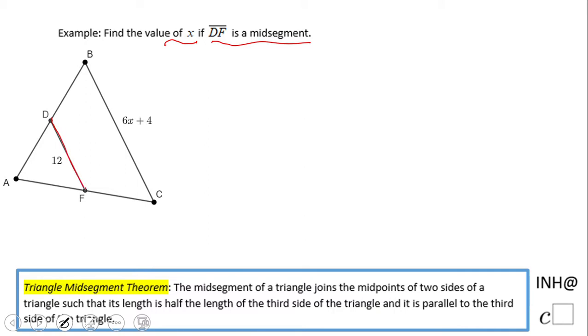This is a midsegment. Let me be sure you know what a midsegment is. That means F is the midpoint of AC and D is the midpoint of DB. That's the reason we call this a midsegment.